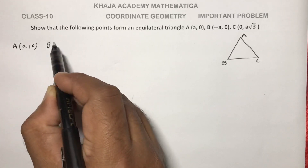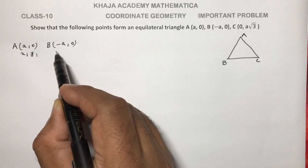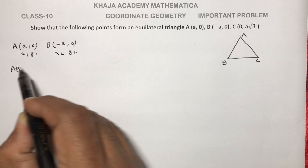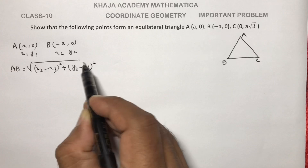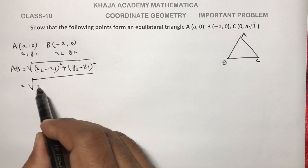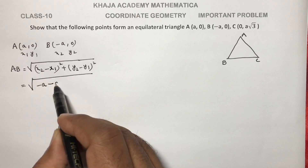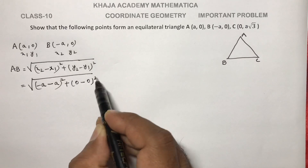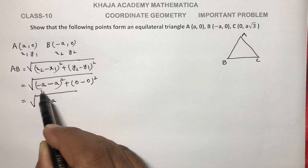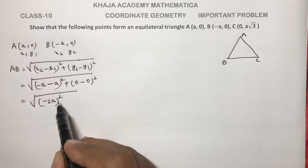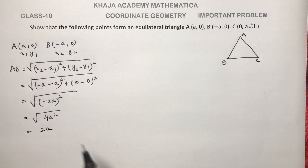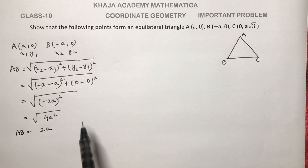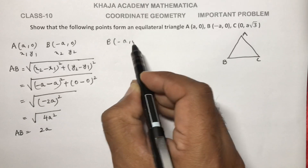First, take A and B. A is (a, 0) and B is (-a, 0), so x1, y1, x2, y2. AB distance equals under root of (x2 - x1) whole square plus (y2 - y1) whole square. Here, under root of (-a - a) whole square plus (0 - 0) whole square, which gives (-2a) whole square, equal to 4a square. So AB distance is 2a units.